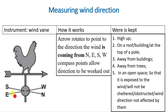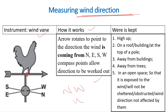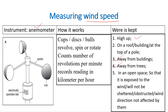Next is the wind vane, which is used to measure wind direction. It rotates to point in the direction from which the wind is coming. The weather vane — the part with the arrow — rotates, while the compass directions remain fixed. It shows the direction the wind is coming from: north, east, south, or west. The compass point allows the direction to be worked out. The wind vane is kept in the same location as the anemometer.